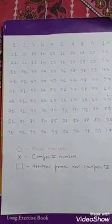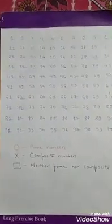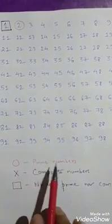You have to write down from 1 to 100. The method is: first, box number 1, which is neither prime nor composite. Next, number 2 is a prime number, so circle it with the red colour. Now you will cross — with black pen — all the multiples of 2.